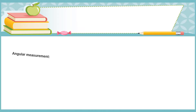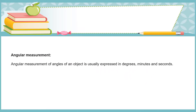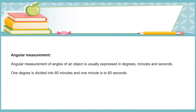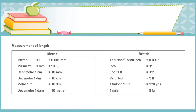Angular measurement: angles of an object are usually expressed in degrees, minutes, and seconds. One degree is divided into 60 minutes, and one minute is divided into 60 seconds. You can see the different measurements of length in the provided table.